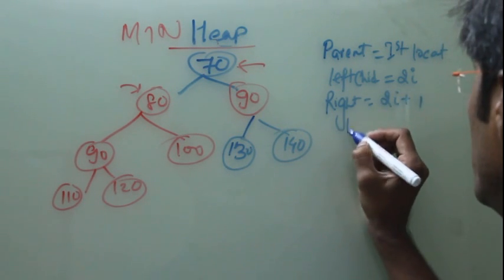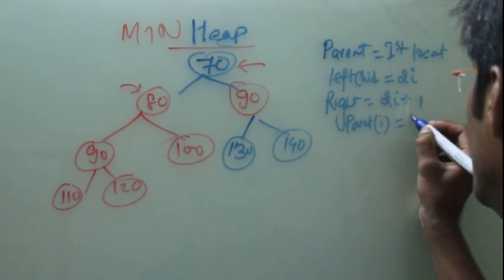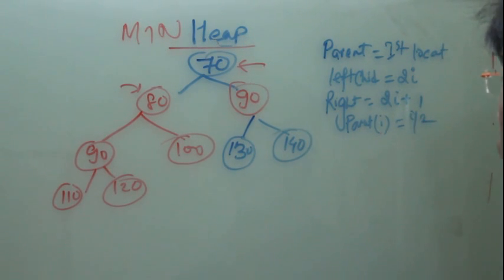At any point of time if we have to find the parent, we divide by 2.